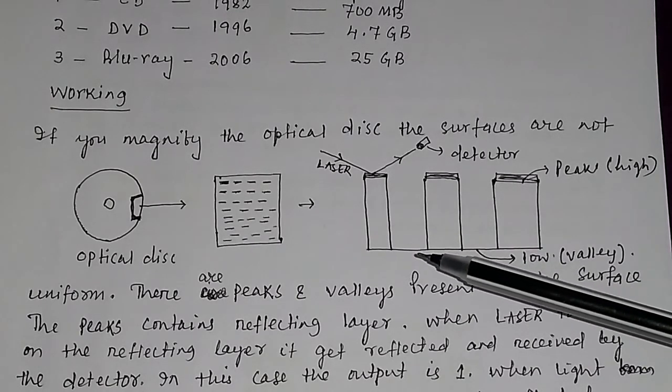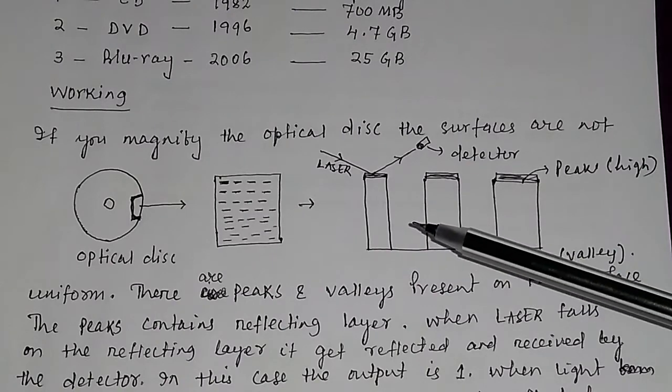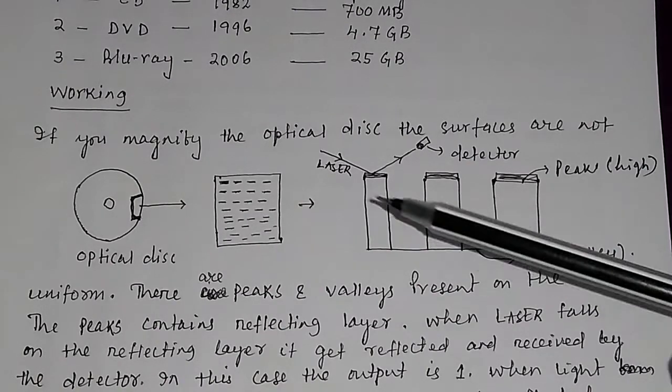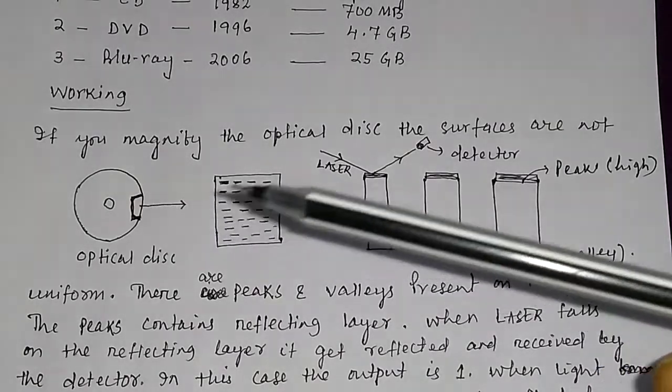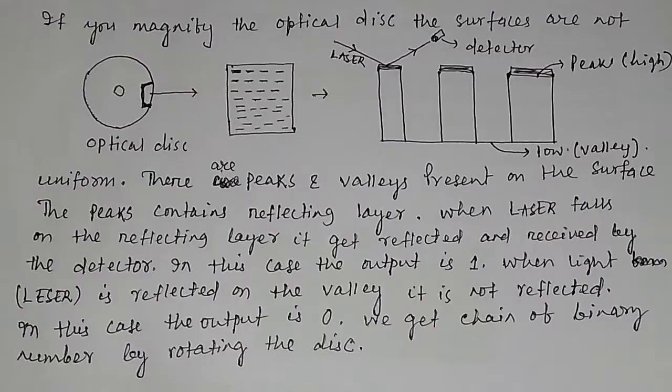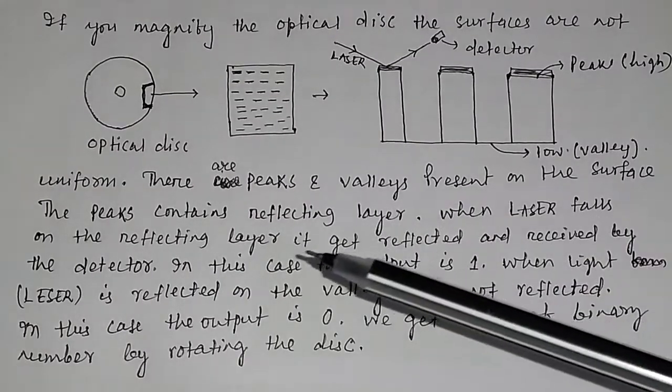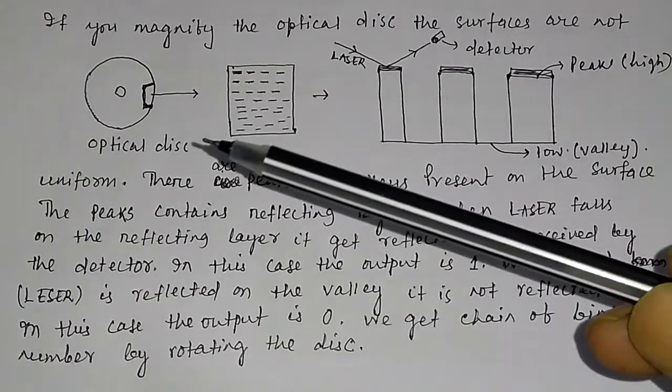So we get a chain of binary numbers when the disk is rotated. This is the basic principle in optical disk.